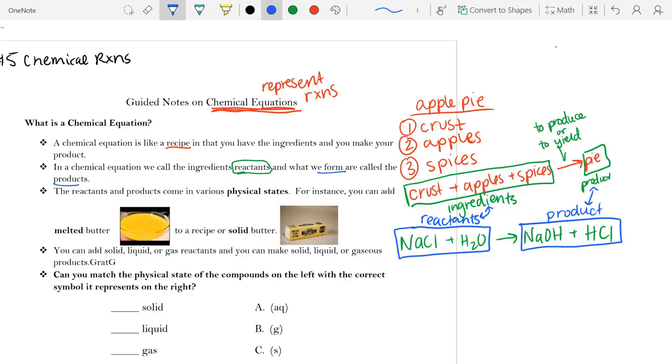And reactants and products can come in various physical states. For instance, you could add melted butter, which would be a liquid, to a recipe, or sometimes they call for a solid butter.